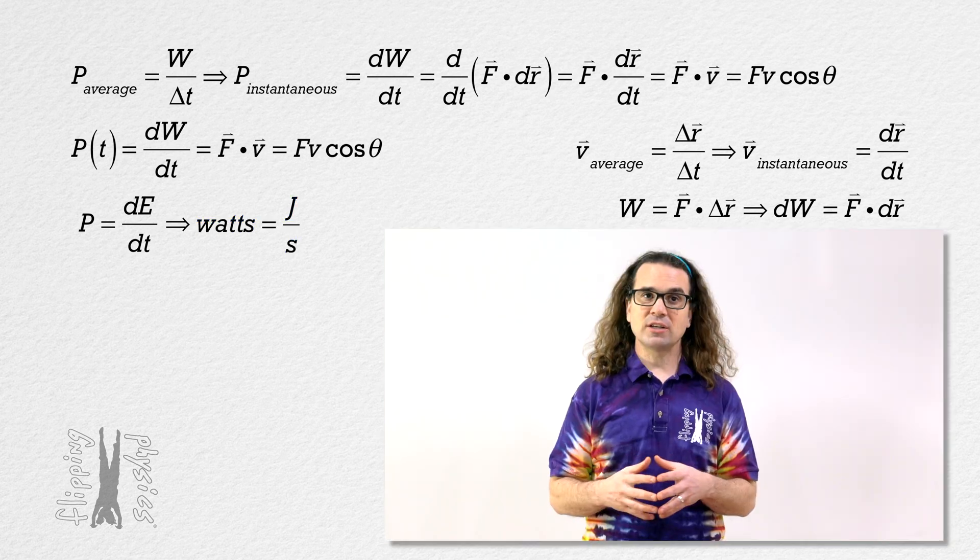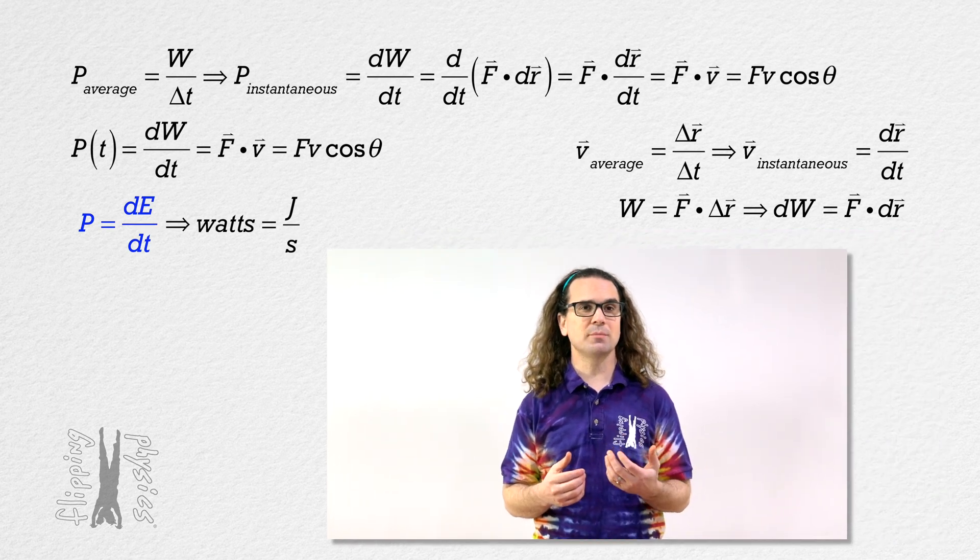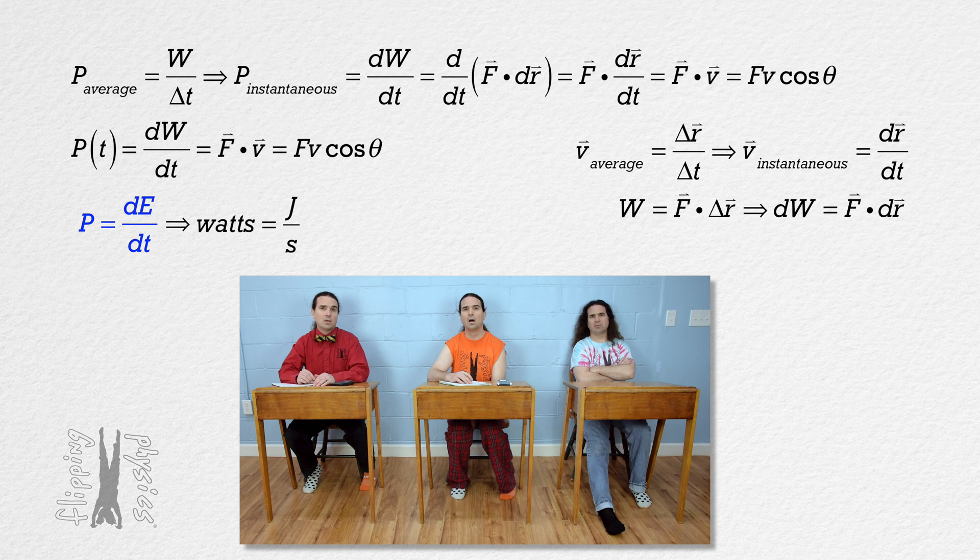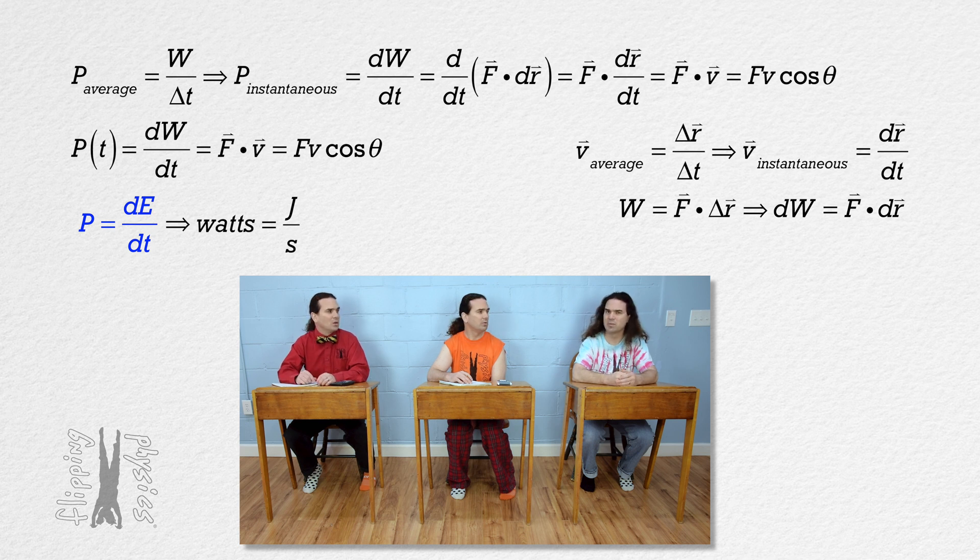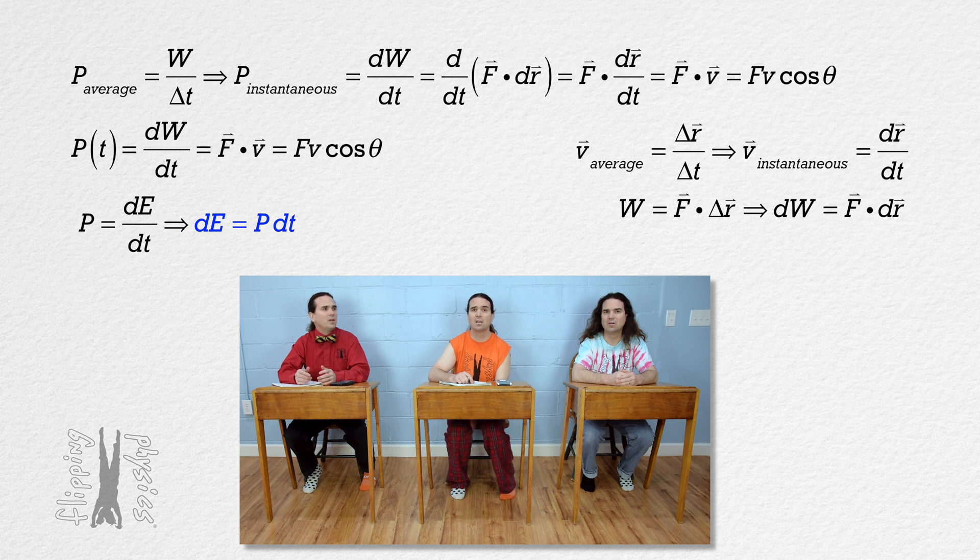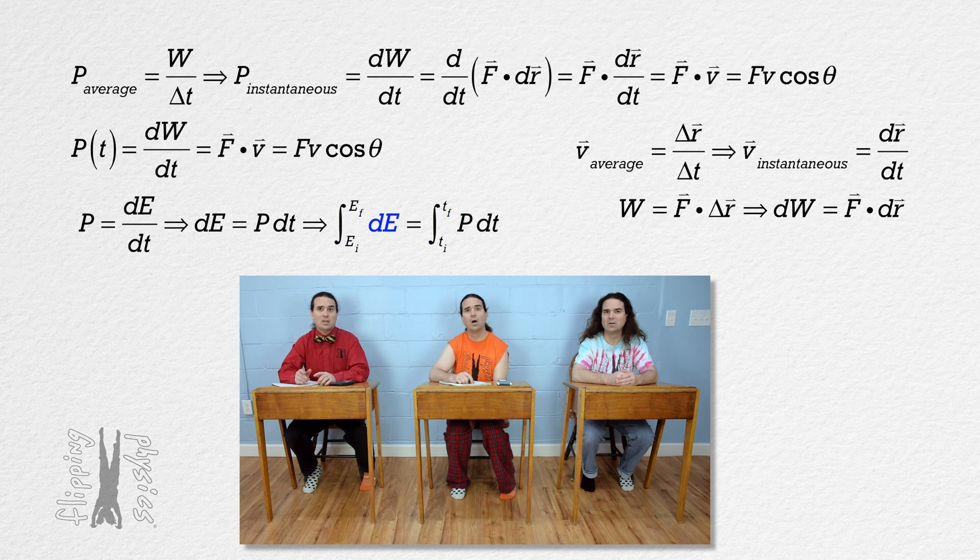Bo, please rearrange the equation power equals the derivative of energy with respect to time to form an integral. Rearrange the derivative definition of power to form an integral? What is that? Remember, any derivative can be rearranged to be an integral. No, that I do not remember. You just multiply the derivative power equation by dt to get dE equals power times dt. And then you take the integral of both sides, because the left side is with respect to energy, it is from energy initial to energy final. And because the right hand side is with respect to time, the limits are time initial and time final.